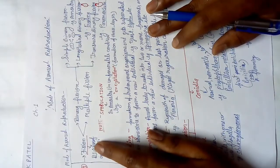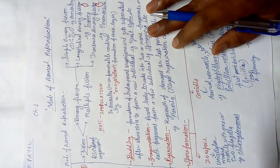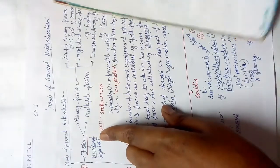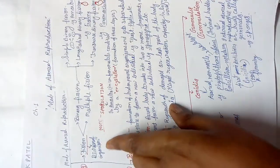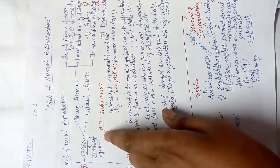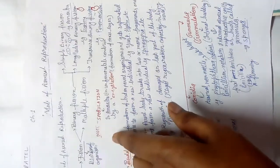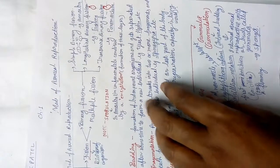First is fission. Fission means breaking or division of something. In simple language, division of organisms — a parent cell divides into two or more than two cells. This is called fission.